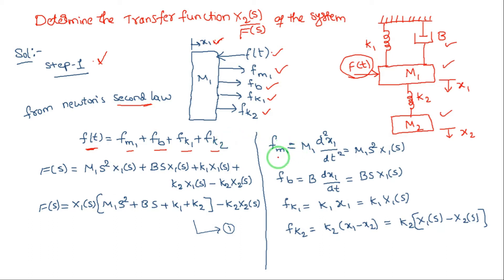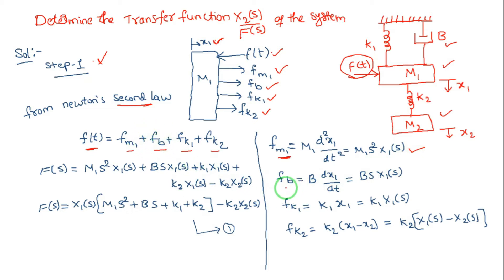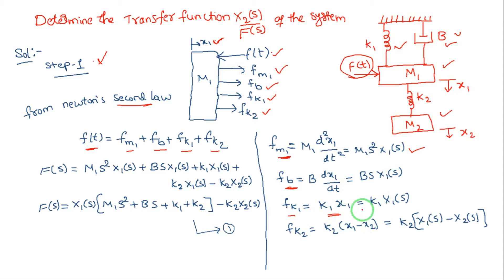Now write the individual force equations. The opposing force due to mass m1 is fm1 = m1 * d²x1/dt², which in Laplace domain is m1 * s² * X1(s). The frictional force fb = b * dx1/dt, which becomes b * s * X1(s). The spring force fk1 = k1 * X1(s), since k1 is connected to the reference.